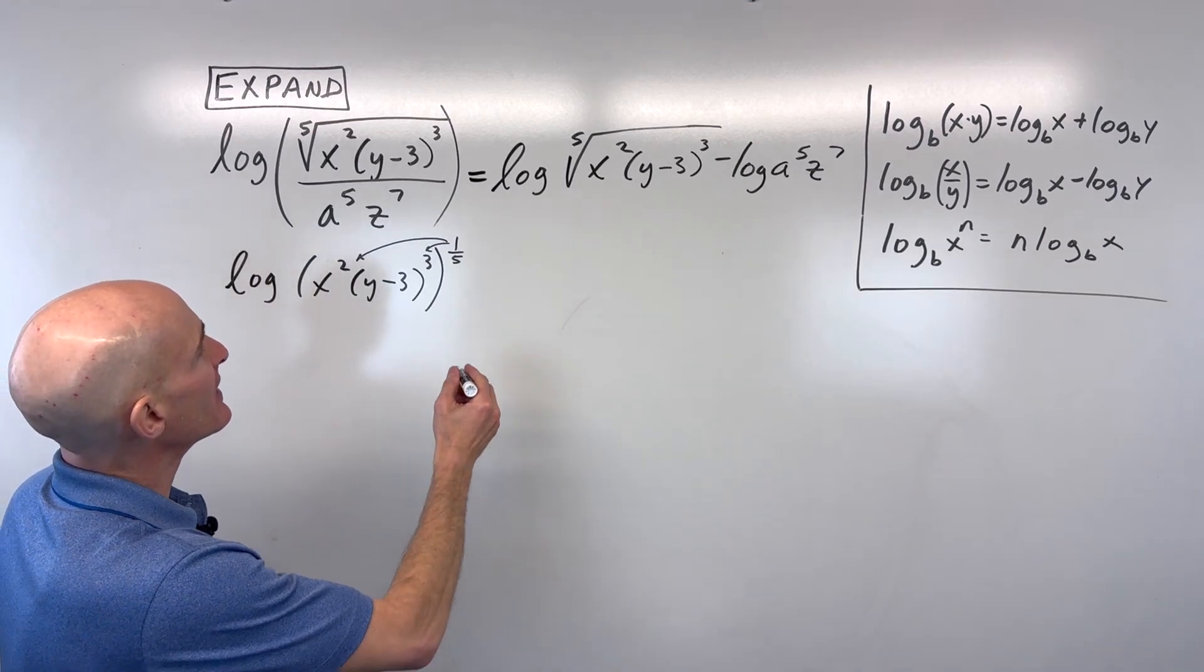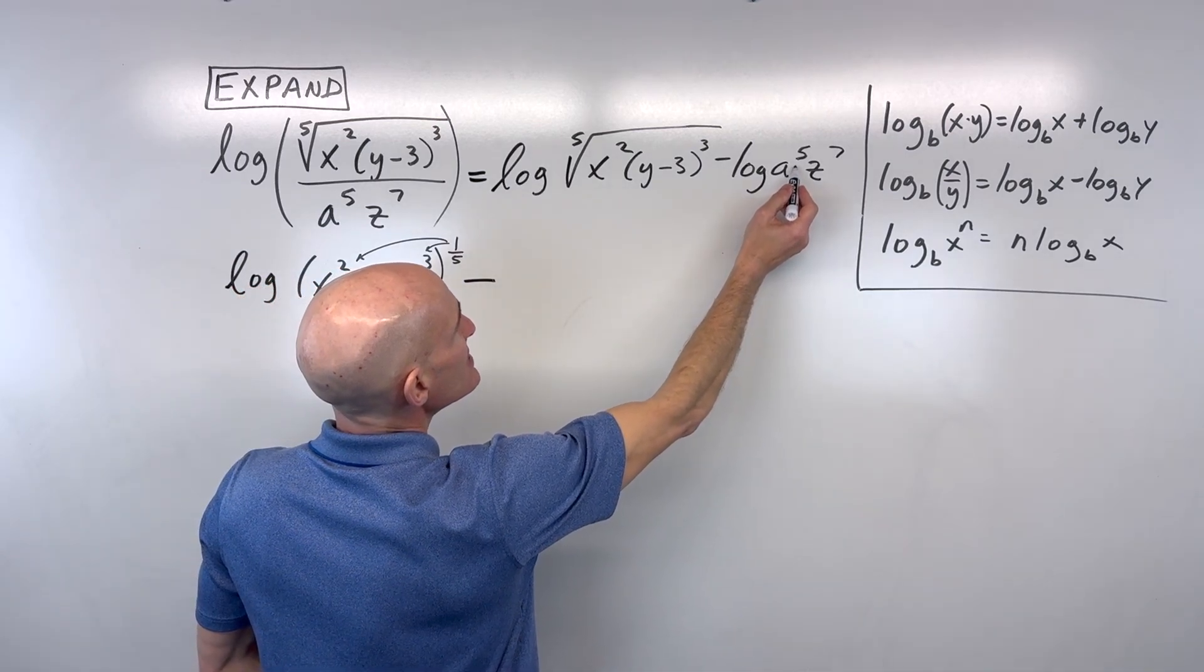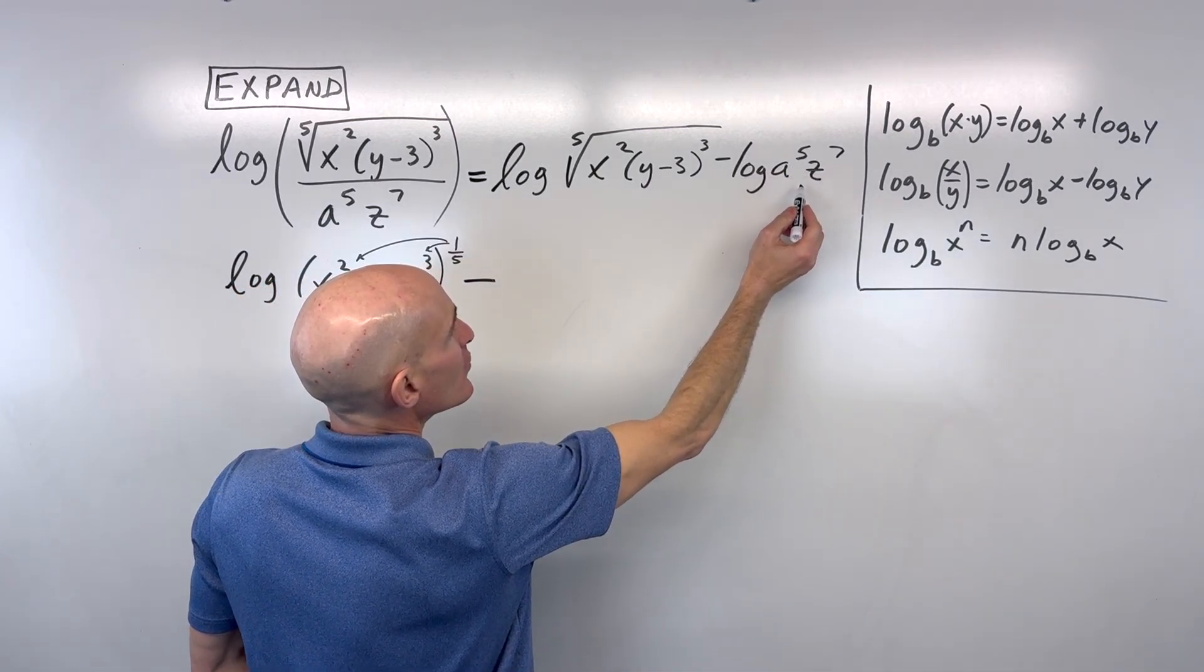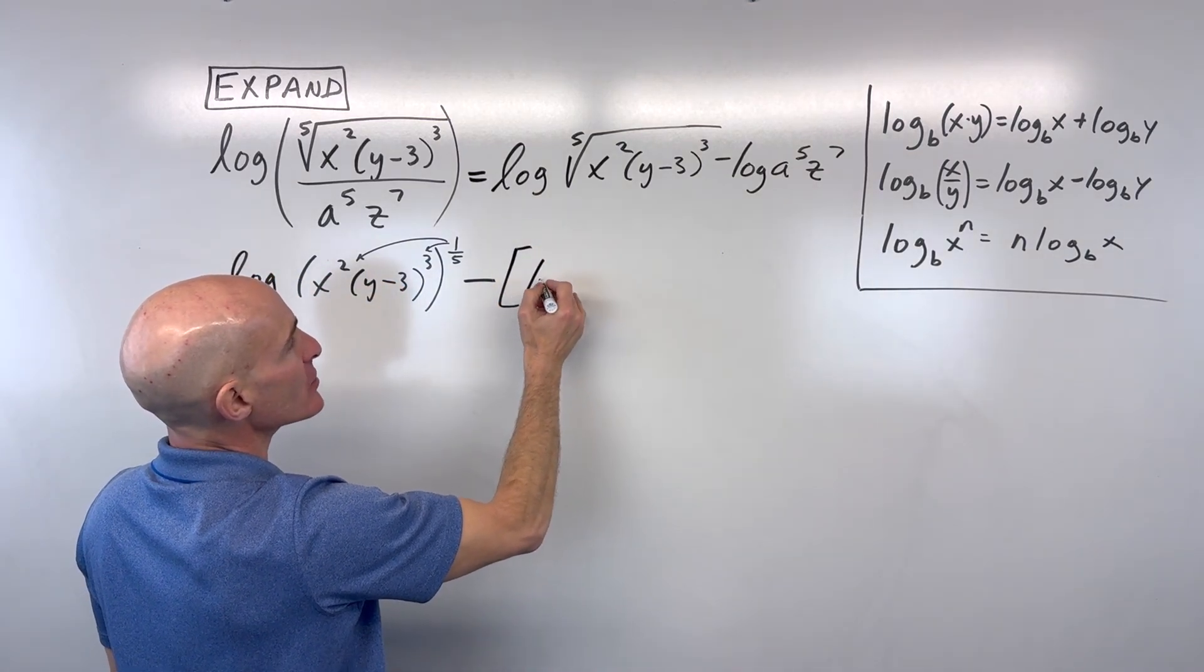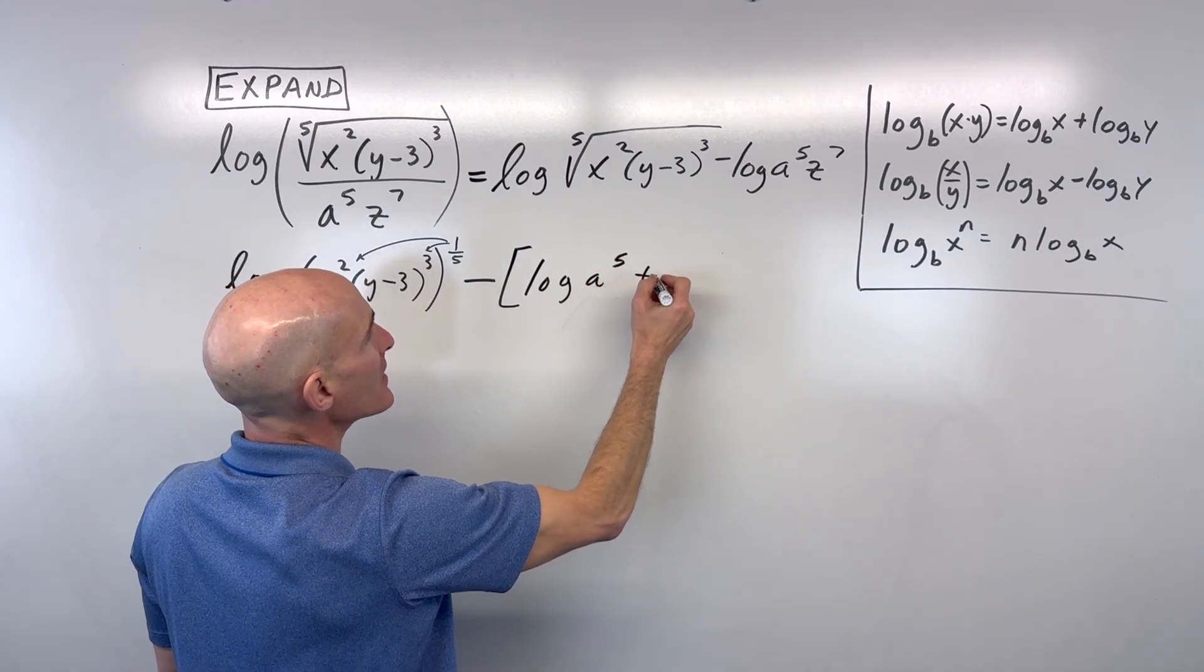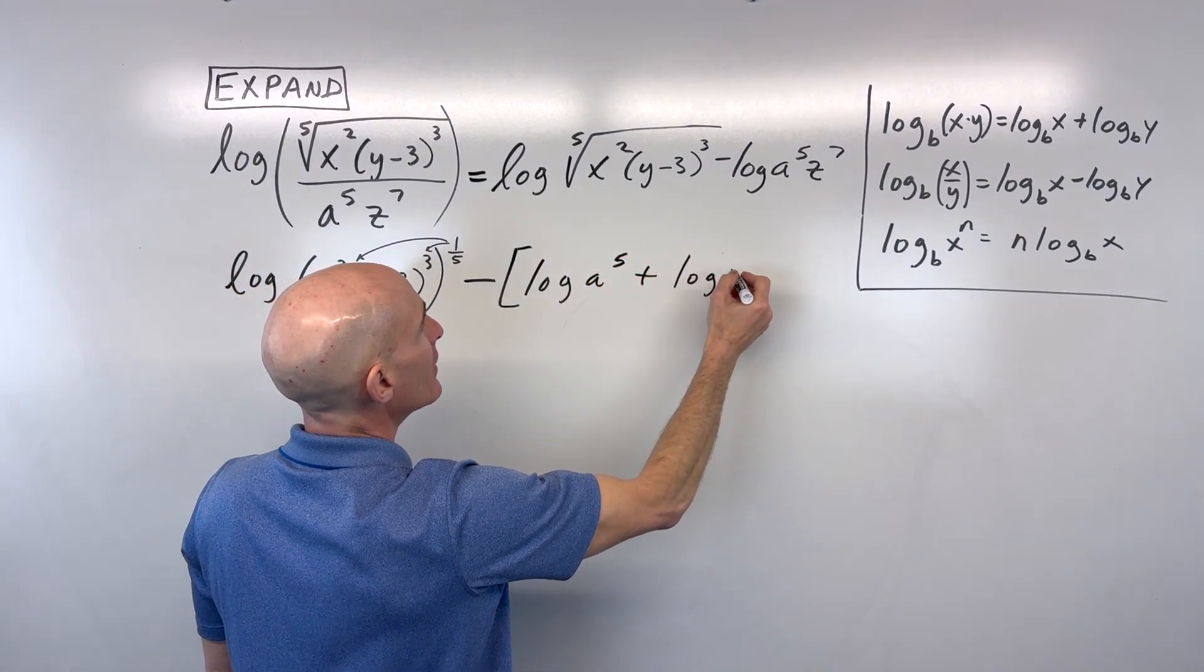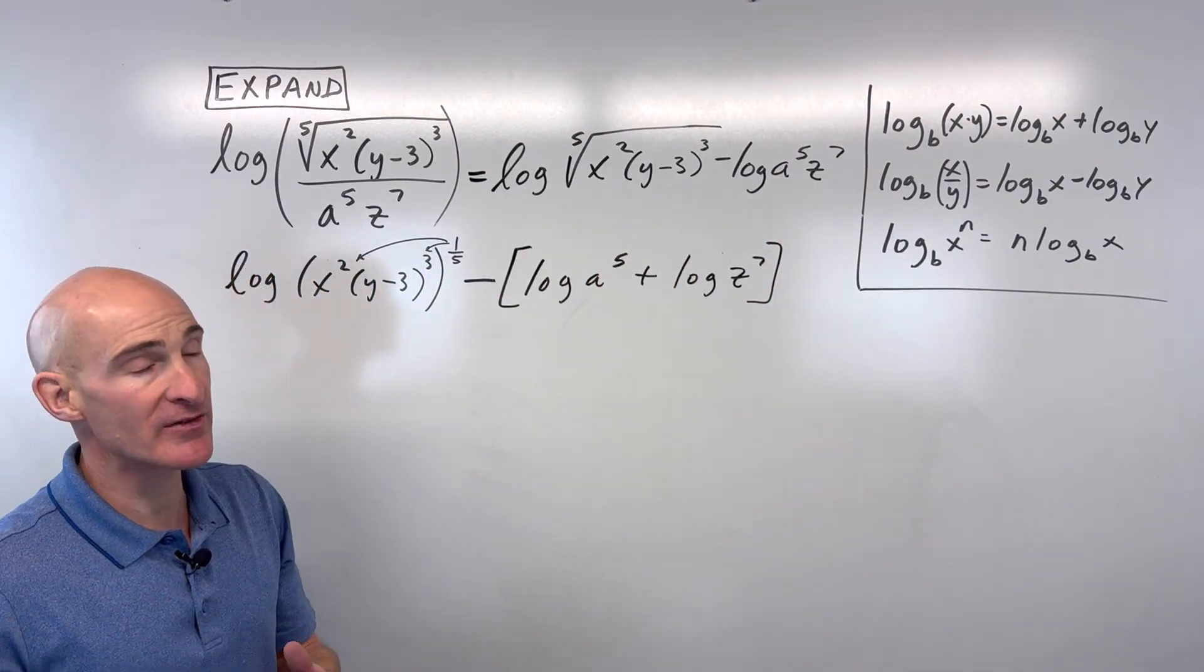So I'm going to do that in the next step. But then here, we're subtracting. But notice these guys are multiplied together. So when we're multiplying, we can write it as a sum of logs. But I'm going to put this in parentheses or in brackets here. I'm going to say log of a to the fifth plus log of z to the seventh. See, it's this whole quantity that's being subtracted. That's why I put it in parentheses.